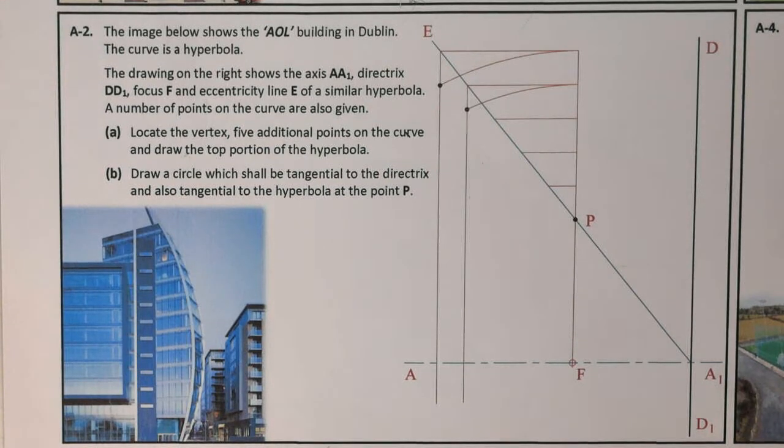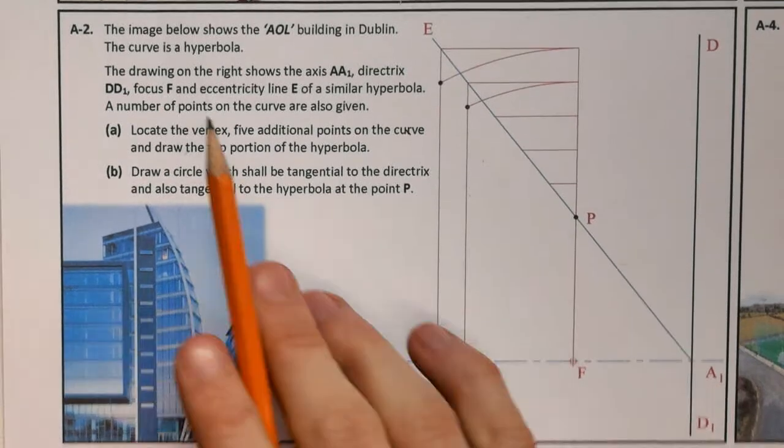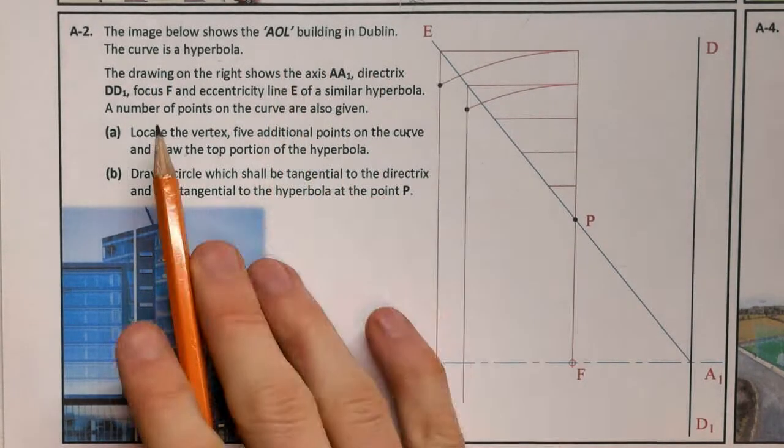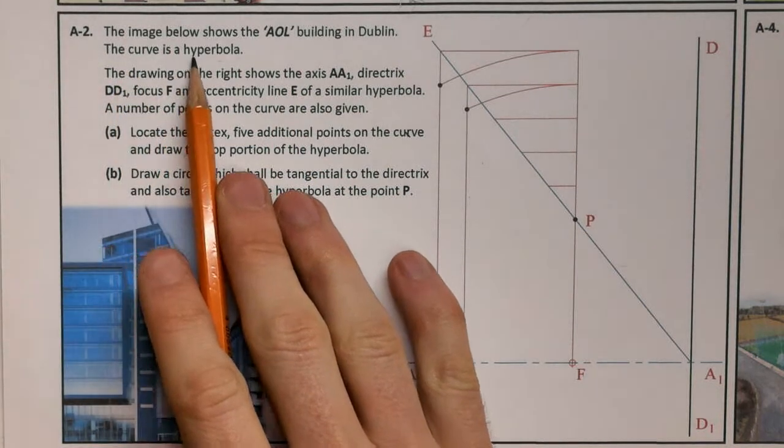Welcome to 2019, question A2. It's a conics question. The image below shows the AOL building in Dublin. The curve is a hyperbola.